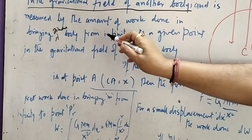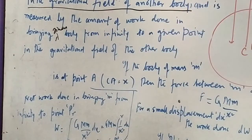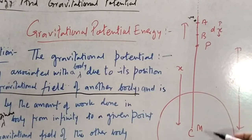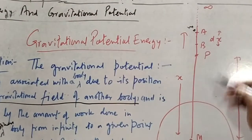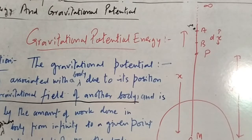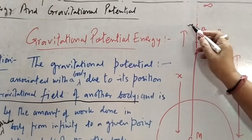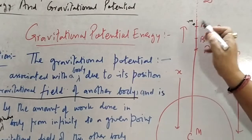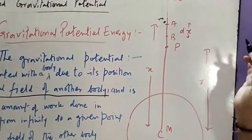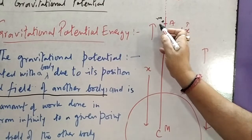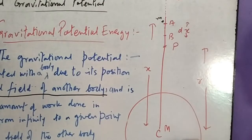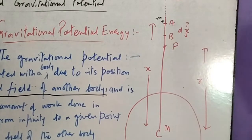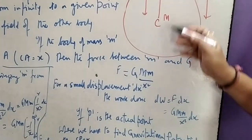This given body, that is the smaller body, is initially placed at point A. Point A is a variable point and its distance from the center C to point A is your X — it is a variable distance. Now the gravitational force between small m and capital M: this is the given body for which we are counting the gravitational potential energy, and only this body has to be taken from infinity to this point. The force F equals capital G·M·m upon x squared.